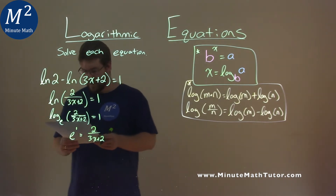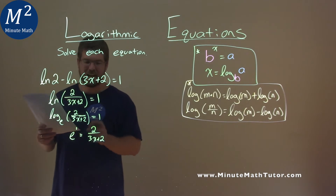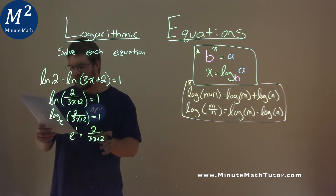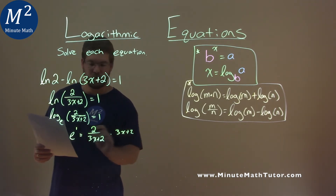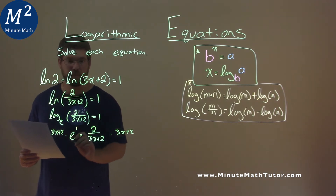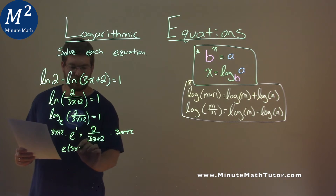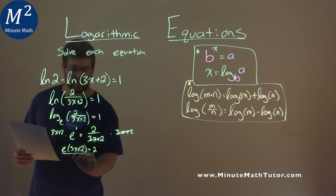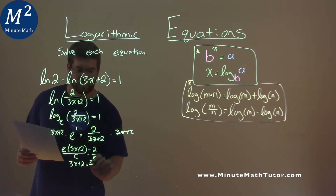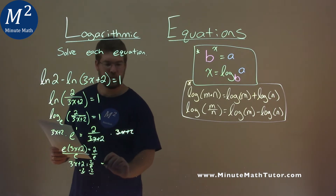We want to get x by itself. I'm going to multiply both sides by 3x plus 2. That cancels, and we're left with e times 3x plus 2 equals 2. I'm going to divide both sides by e, giving 3x plus 2 equals 2 over e. Let's subtract 2 from both sides.